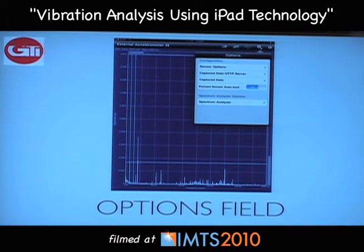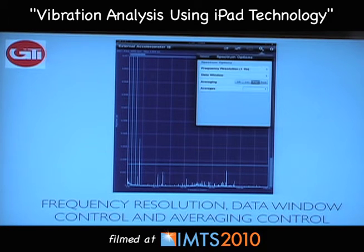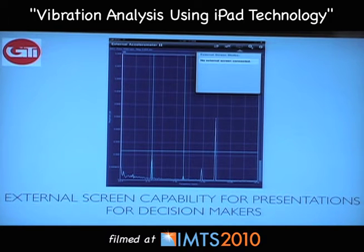To go over a few features of this software: you have all your sensor options, you can capture and save data in many forms, and you can adjust frequency resolution from 1k hertz all the way up to 100. Averaging is available — you can let it run exponentially or take a peak reading with a 4 or 10 sample click. There's also a feature for demonstrations: if you've detected a machine going down on the plant floor, you can plug the unit into an external screen and post a full image of the vibration levels and frequencies to discuss with your superiors.